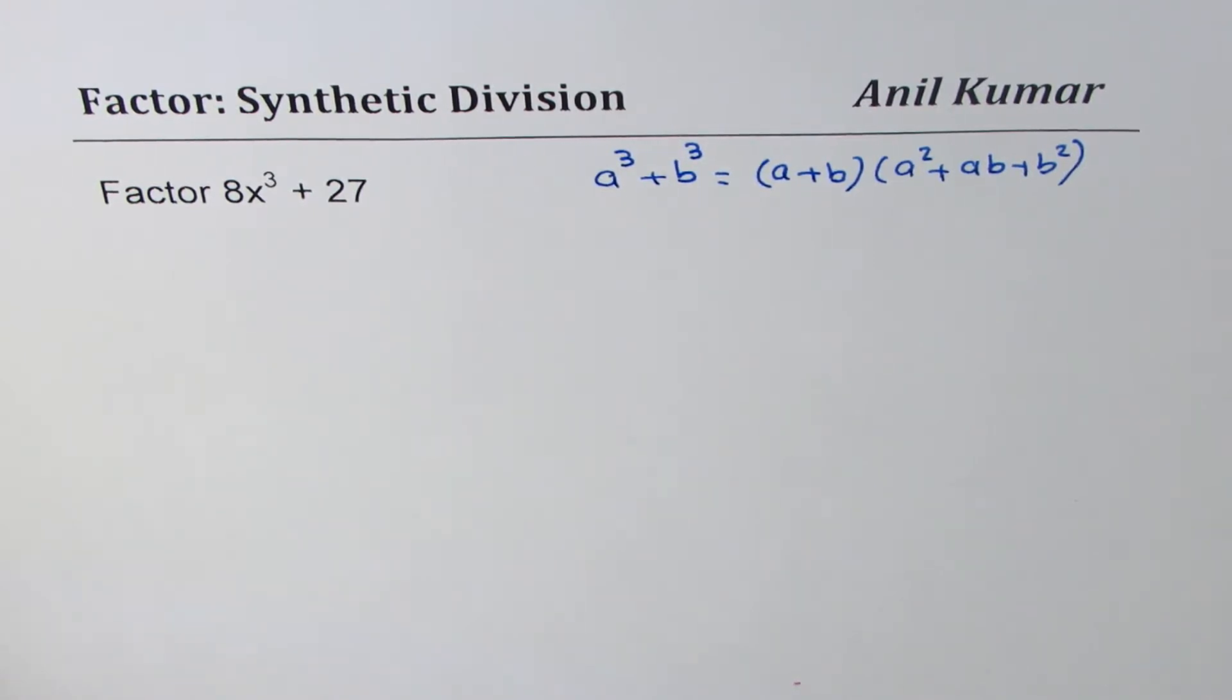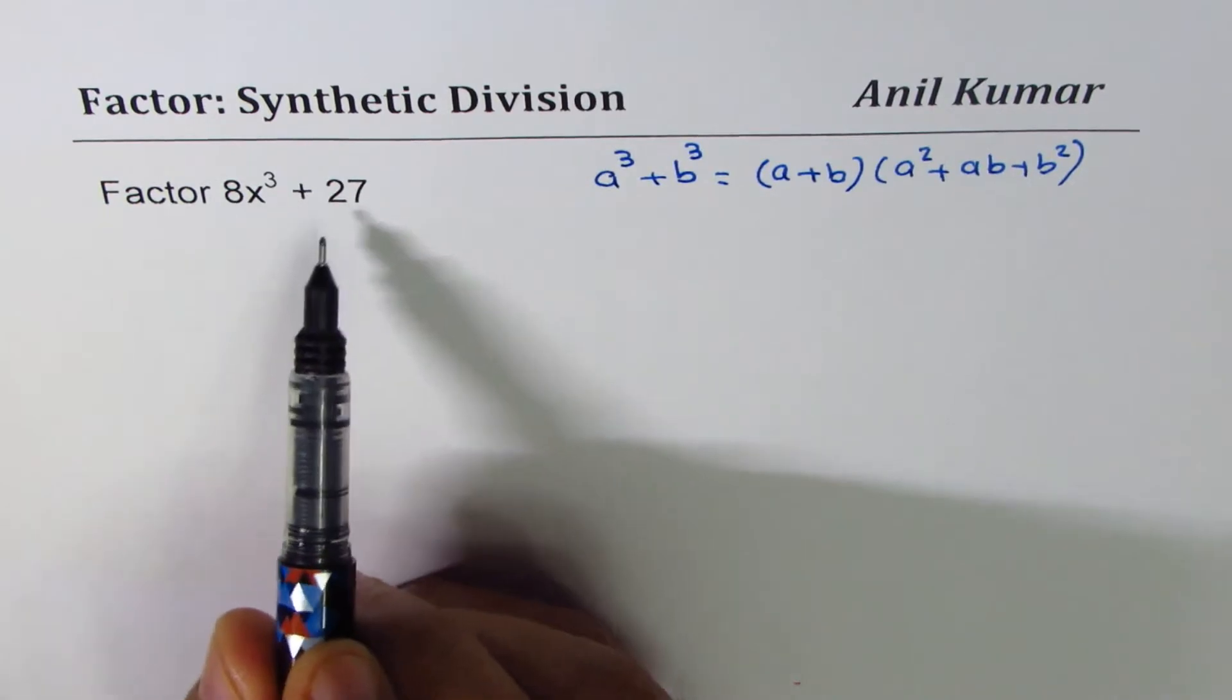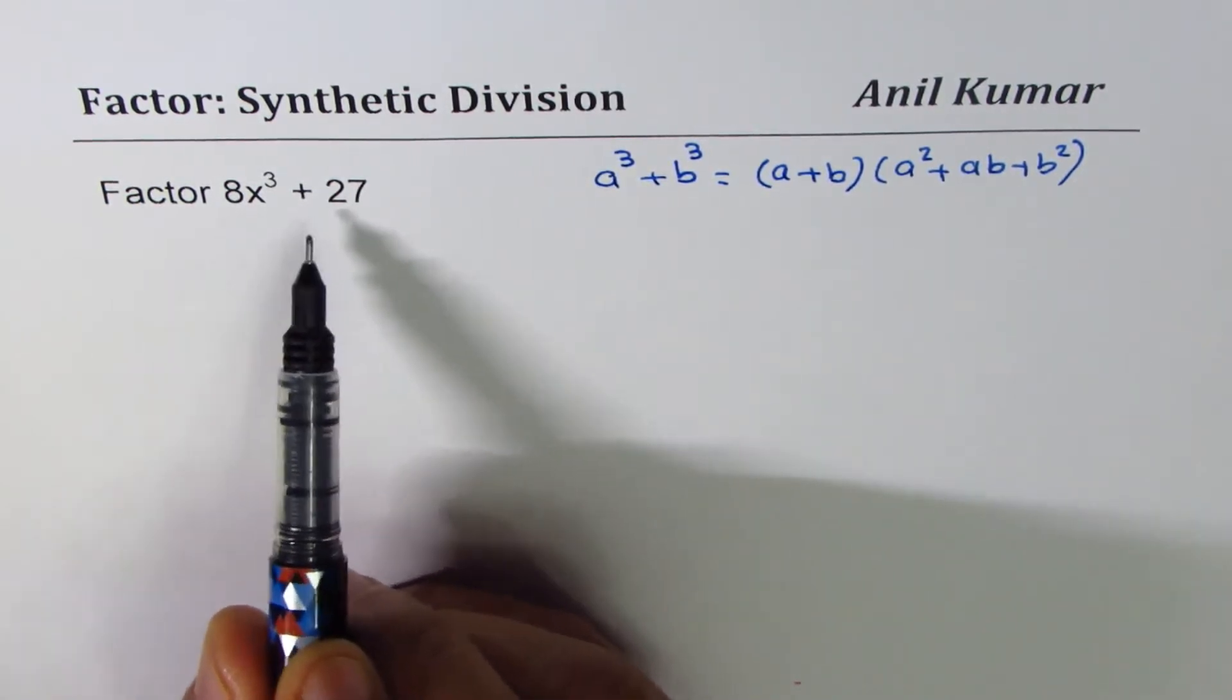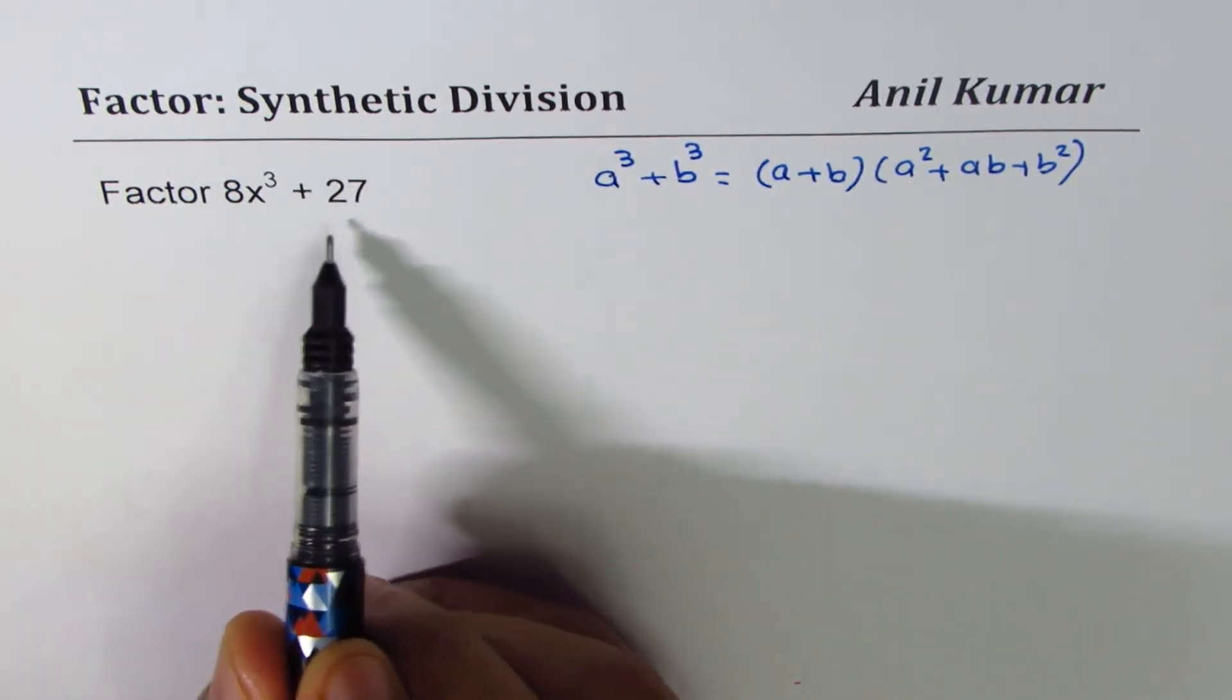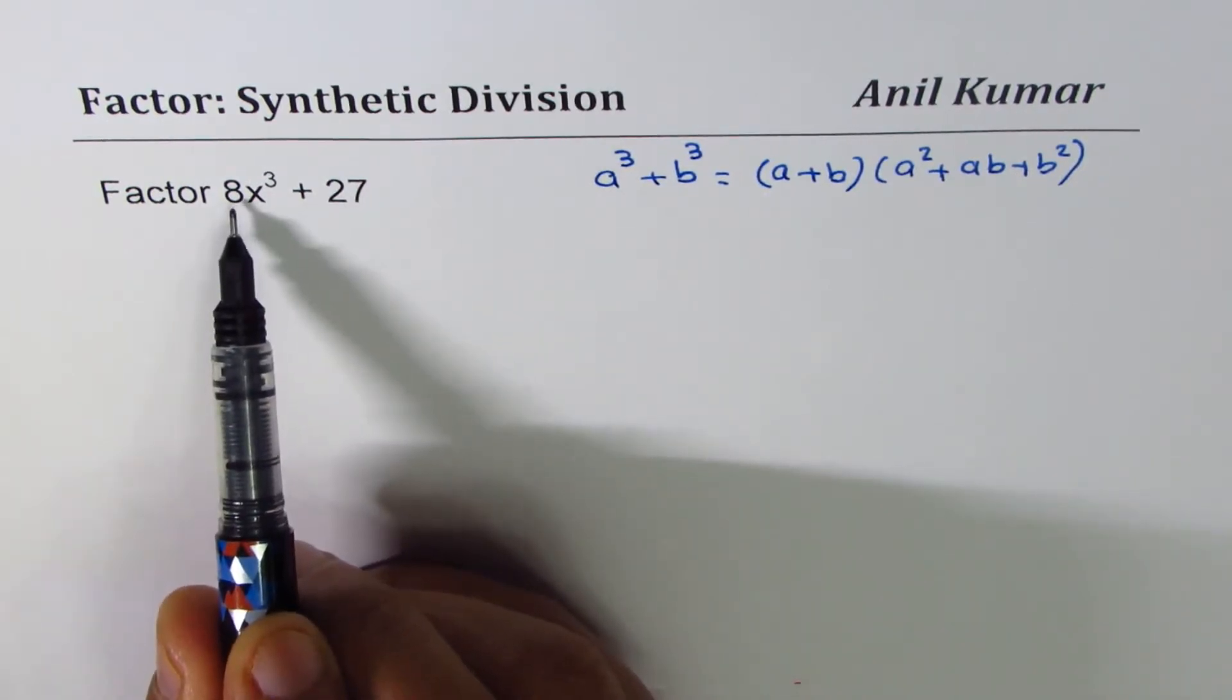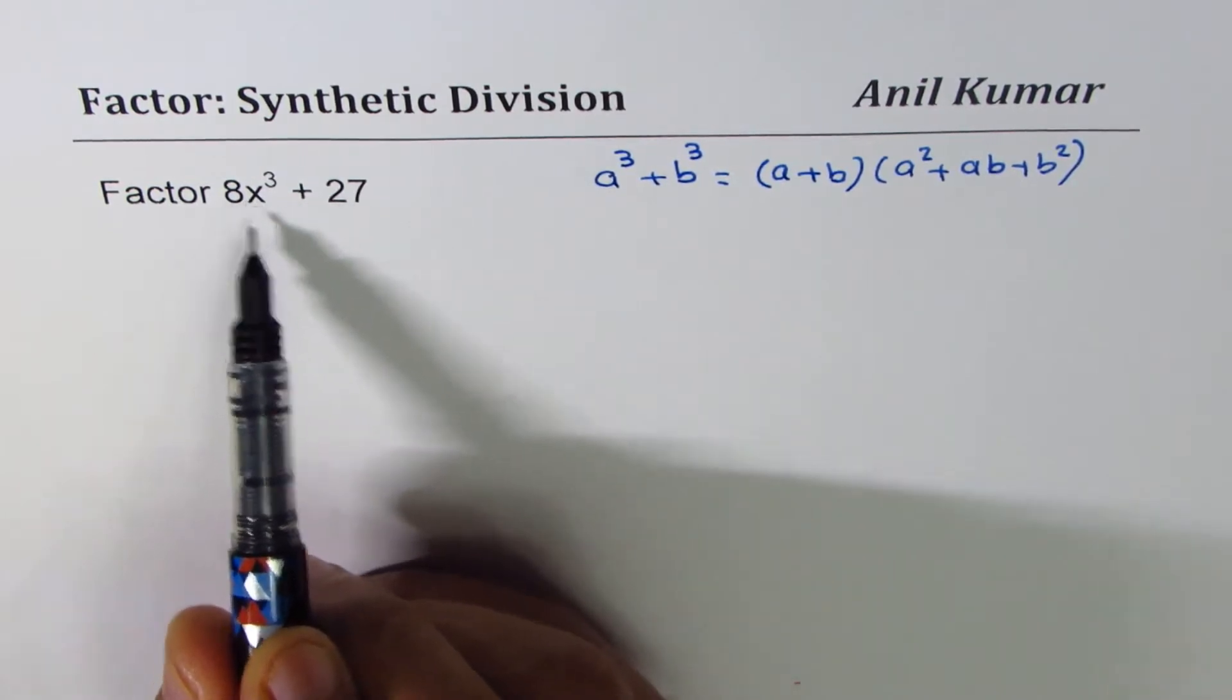First, let me thank this question to my subscriber, and then let's begin. Whenever we have a cubic function, we have to look for a factor, and that comes with trial and error. The possible factors are factors of 27 divided by factors of 8.